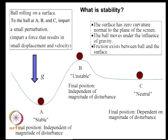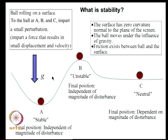First let us try to develop some notion about what is stability. To do that we will consider a curved surface which is prismatic, perpendicular to the plane of the screen, with constant curvature. We imagine a valley and a mountain, and a ball rolling on this surface. Initially the ball can be placed at A, B, or C. Gravity drives the motion of the ball. We place the ball at point A and impart a slight disturbance to it.